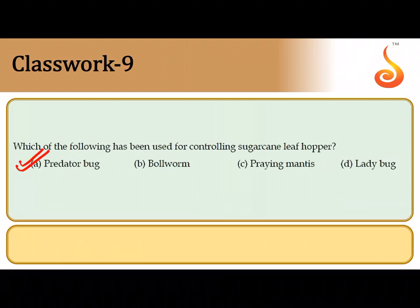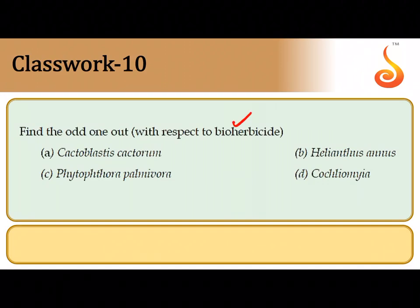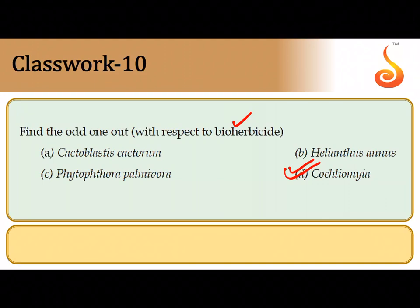The ninth question asks which organism has been used for controlling sugarcane leafhoppers. Predator bugs have mostly been used to control leafhoppers that cause extensive damage in sugarcane crops, so it is option A. The tenth question asks to find the odd one out with respect to bio-herbicides, which are natural agents that destroy unwanted weeds and plants. Cochleomia is the odd one out because it is a parasitic fly, not a bio-herbicide.